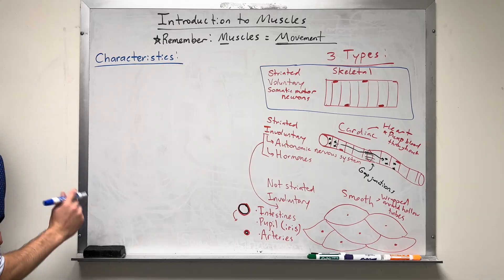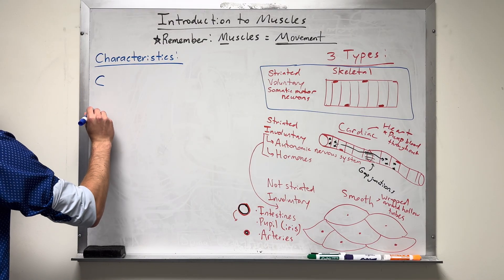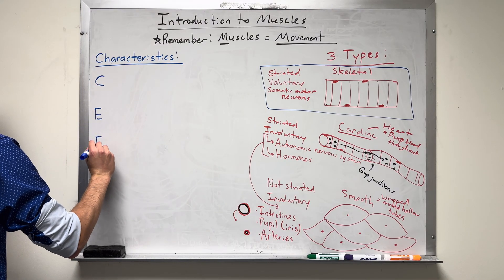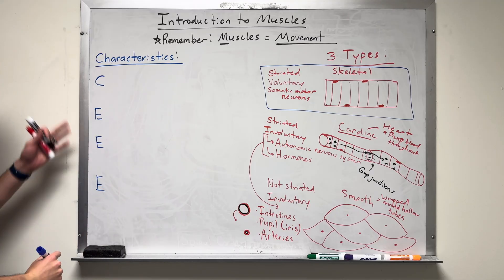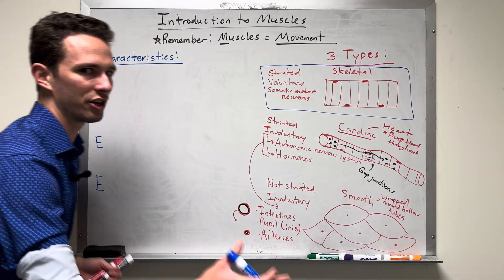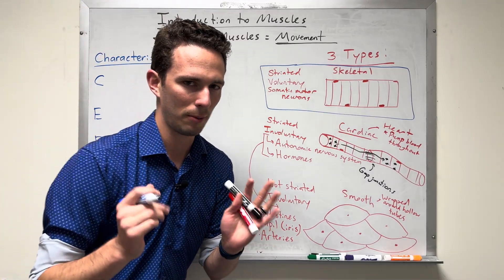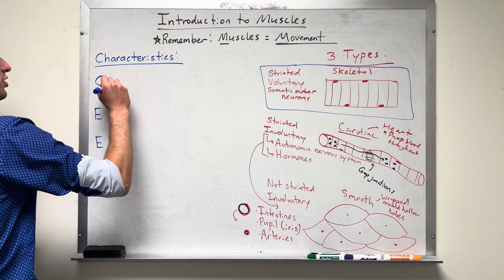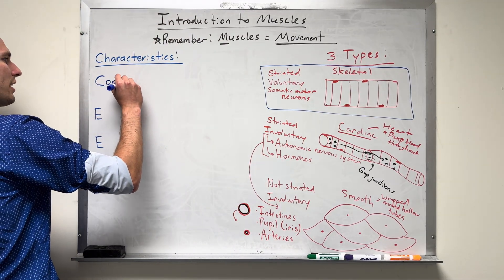I remember characteristics of muscle tissue by CEEE. Three E's, one C, pretty straightforward. You could probably guess, like if I were to say, what's a characteristic of a muscle? You'd probably say number one would be contractable. It is contractable.